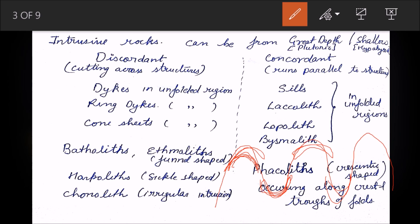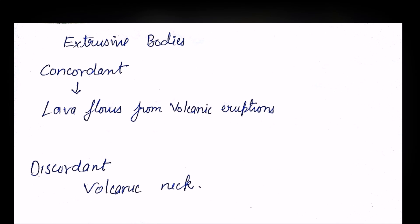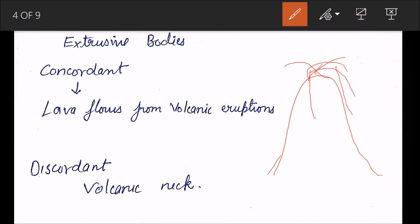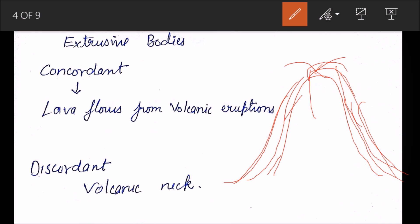Moving on to extrusive bodies — these form when lava comes to the surface. Mostly they are concordant, which can be explained from the lava flow diagram. From a volcanic peak, lava spreads slowly over the surface and forms layers. These become concordant with the host rock, following the same attitude. If there is a fold, the lava flows alongside it and forms a concordant mass.